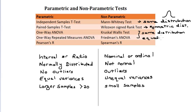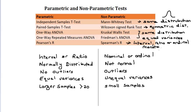For Spearman's R, your data must be interval, ratio, or ordinal. In addition, you have to have a monotonic relationship between your data. In general, monotonic means that when one variable goes up, the other also goes up, or one variable goes down and the other goes down.